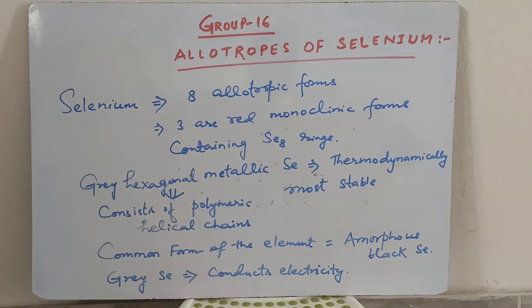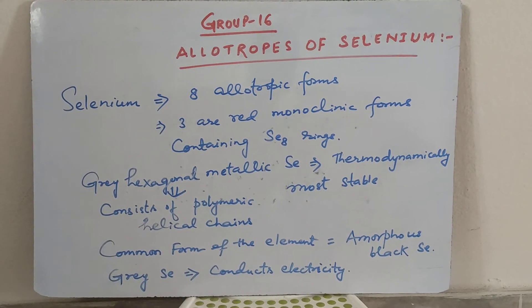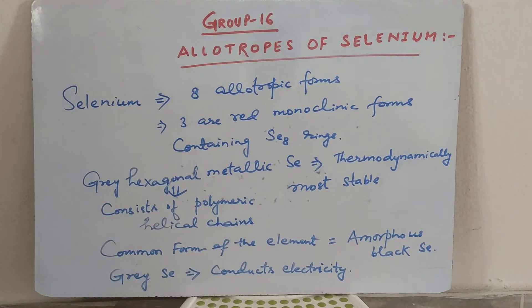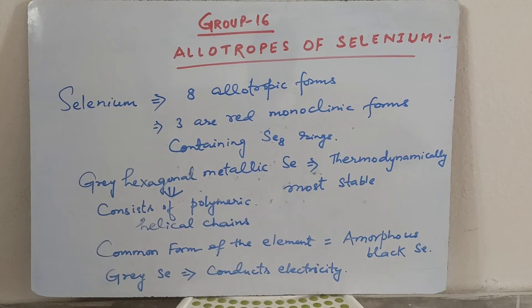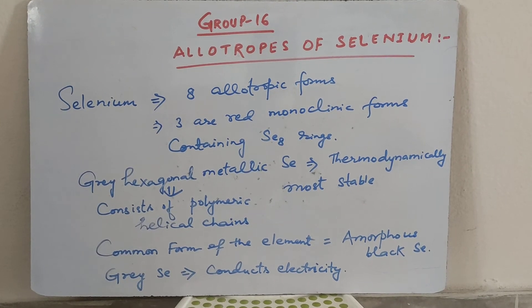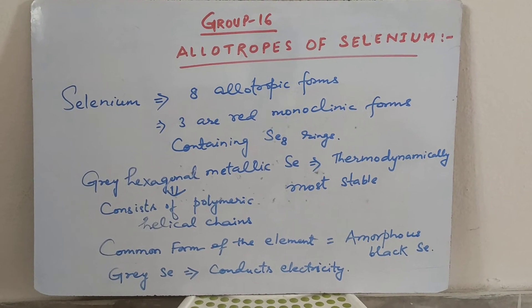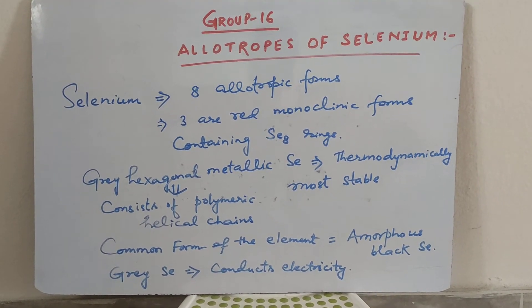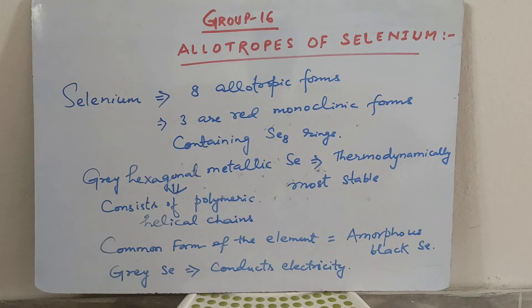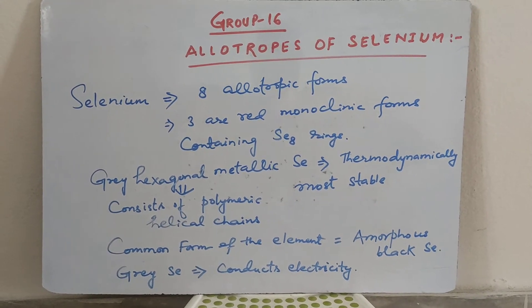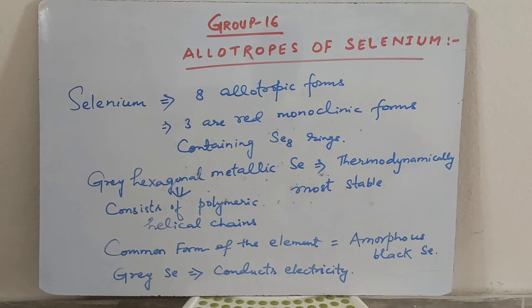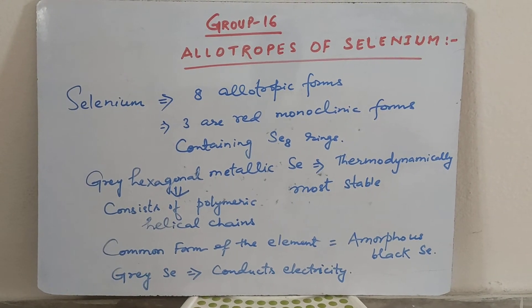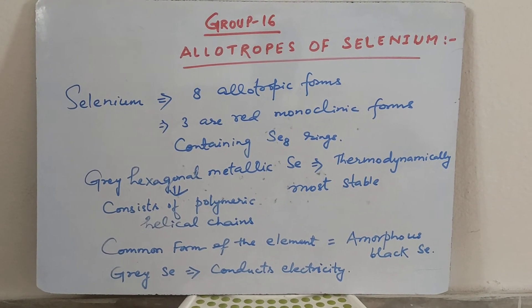Three are red monoclinic forms containing Se8 rings. Gray hexagonal metallic selenium is thermodynamically more stable and consists of polymeric helical chains. The common form of the element is amorphous black selenium.